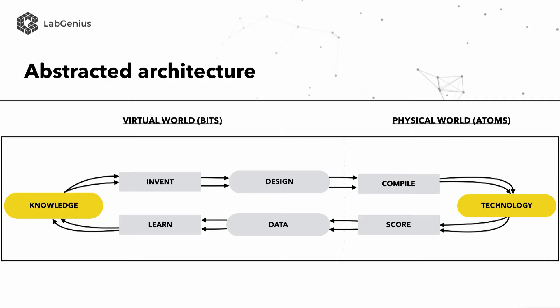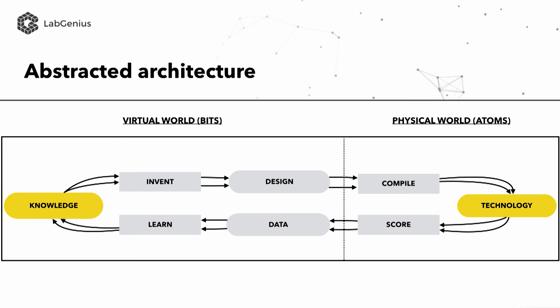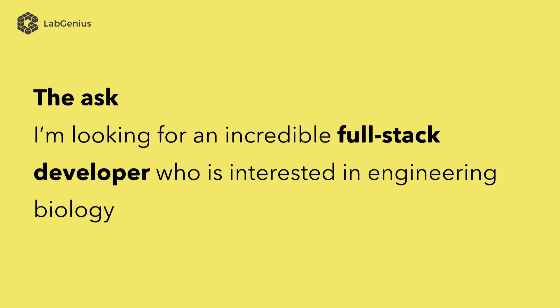I want to leave you with a final thought. If you abstract the empirical computation engine into this schema, you can quickly see it can be used to tackle any real-world problem that you can't model in silico but for which you can generate high-throughput experimental data cheaply. This whole branch of empirical computation will be deployed against all of those problems in the years to come. Thank you to the LabGenius team, and if anyone knows an incredible full-stack engineer, please come and talk to me. Thank you very much.